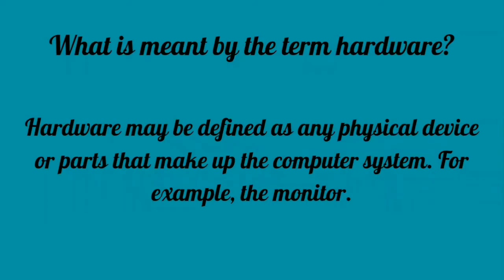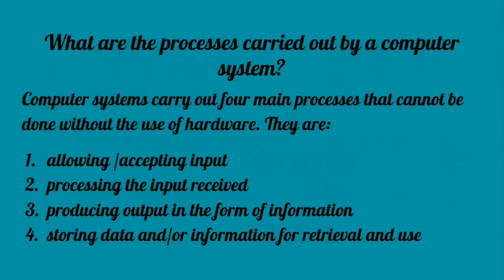Hardware can be defined as any physical device or parts that make up the computer system. For example, the monitor, the keyboard, and the mouse. Computer systems carry out four main processes that cannot be done without the use of hardware.